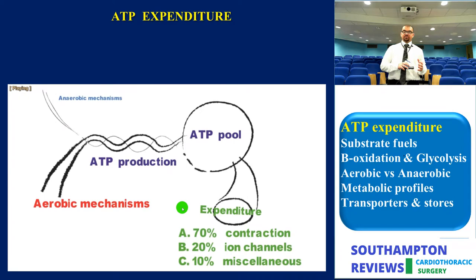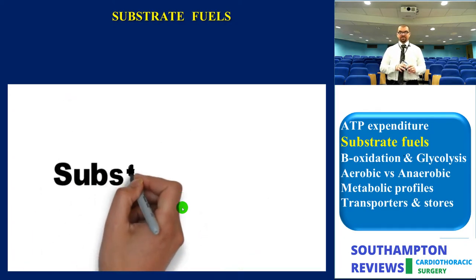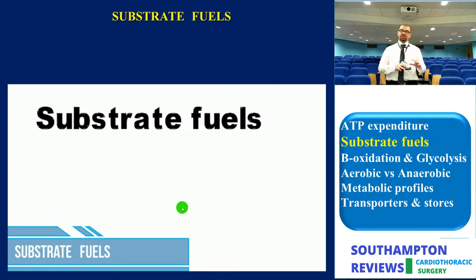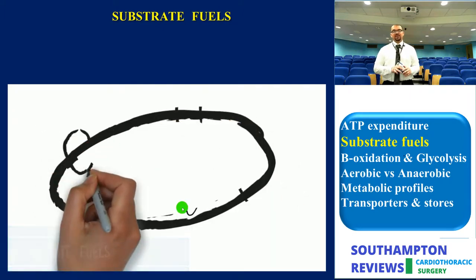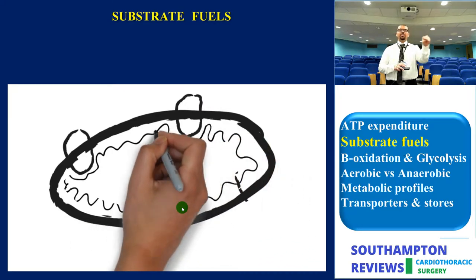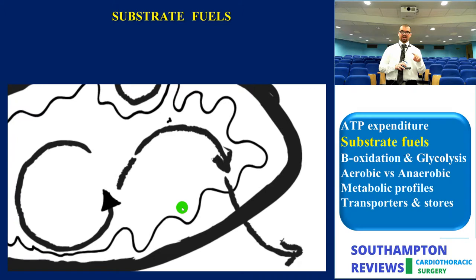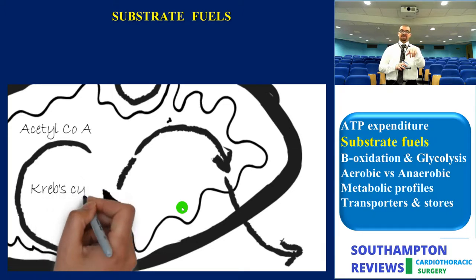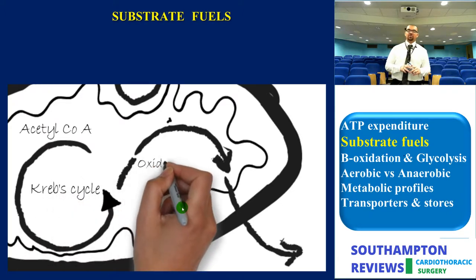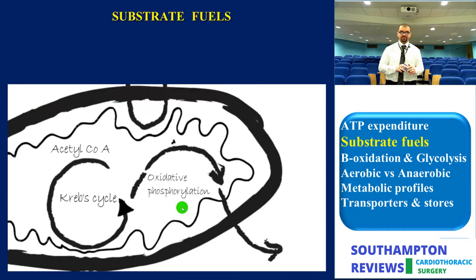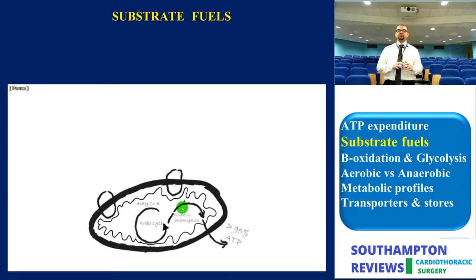Next we'll discuss substrate fuels, a very interesting topic. Regardless of which substrate is used, they all converge to a common pathway in the mitochondria — all substrates ultimately end up as acetyl-CoA, which enters the citric acid cycle, also known as the Krebs cycle, to generate a variable number of NADH and FADH2. This accounts for more than 95% of ATP produced. The remaining 5% is derived directly through substrate phosphorylation.